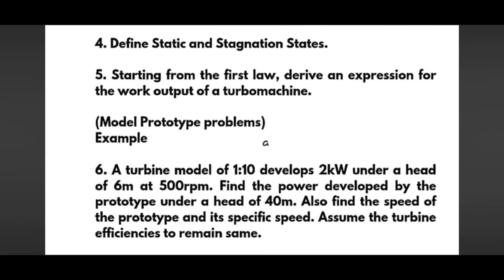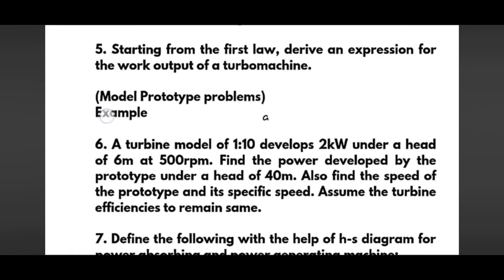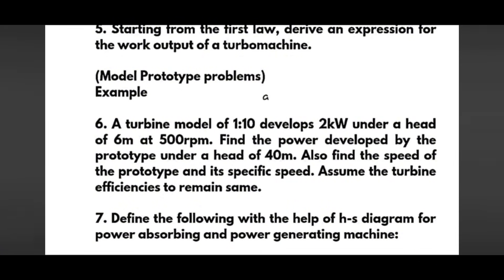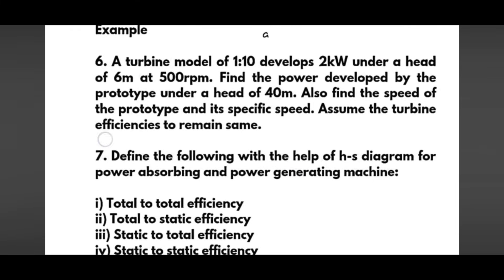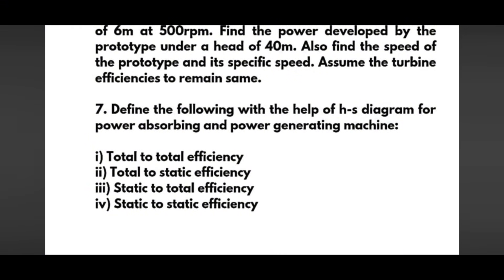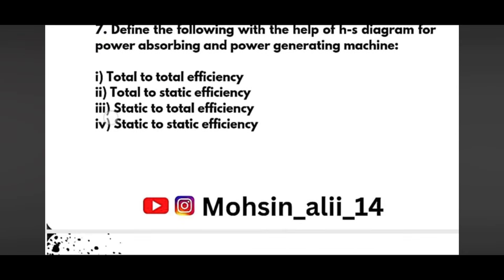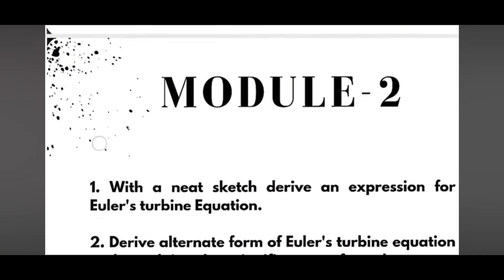Here is a model prototype problem: a turbine model of 1:10 scale develops 2 kilowatt under a head of 6 meters at 500 rpm. Find the power developed by the prototype under a head of 40 meters, find the speed of the prototype and its specific speed, assuming turbine efficiency remains the same. I will provide question papers on my Instagram account so you can practice varieties of problems. Next, define the following with the help of an h-s diagram for power absorbing and power generating machines: total-to-total efficiency, total-to-static efficiency, static-to-total efficiency, and static-to-static efficiency.